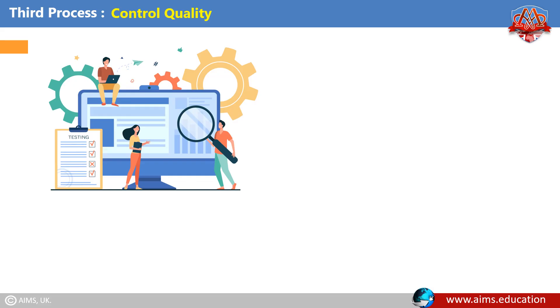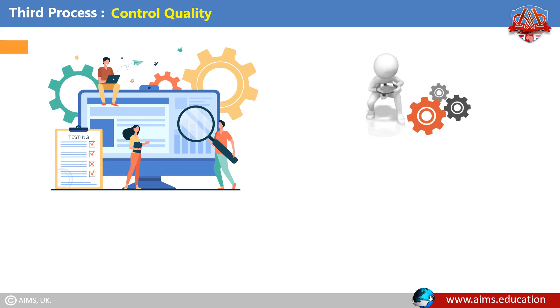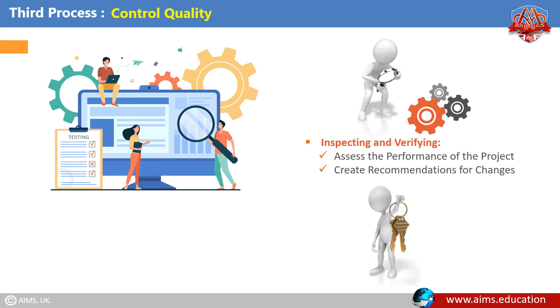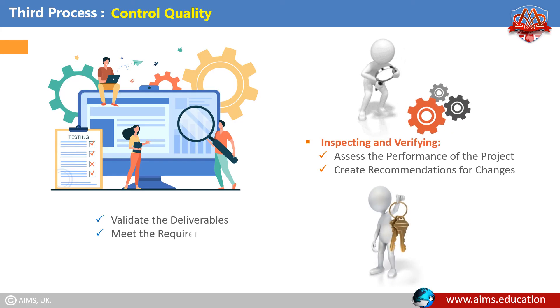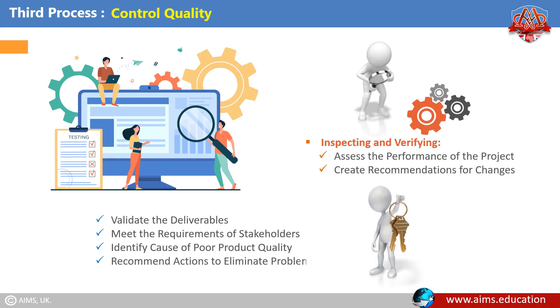Third process — Control Quality: It is a process of inspecting and verifying the product and services in order to assess the performance of the project and create recommendations for changes. The benefits include: validating the deliverables, meeting requirements as specified by stakeholders, identifying causes of poor product quality, and recommending actions to eliminate quality-related problems.